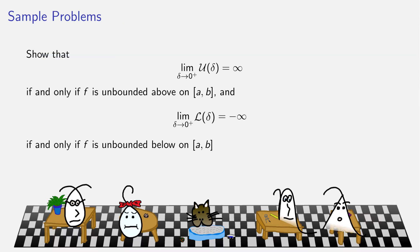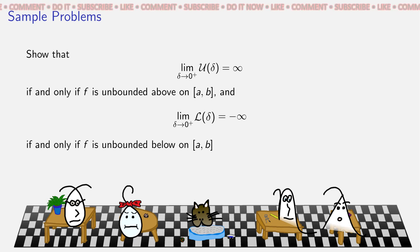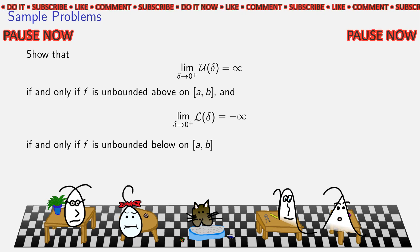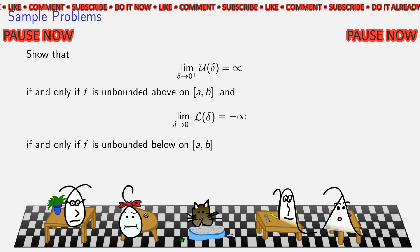With that in mind, here are some sample problems. Prove that the limit of the supremum of the upper sums over all partitions whose norm is less than delta, as delta approaches zero from above, is infinite if and only if the function is unbounded above. Correspondingly, the limit of the lower sum infimum is minus infinity if and only if the function is unbounded below. This is really just an exercise in seeing what happens to the upper and lower sums when the function is unbounded above or below.